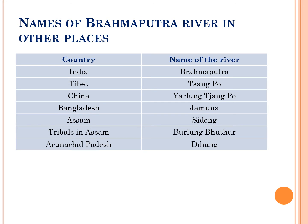Now we will discuss the names of the Brahmaputra river in various places. In India, it is known as Brahmaputra. In Tibet, it is Tsangpo. In China, it is Yarlung Tsangpo. In Bangladesh, it is known as the Jamuna river.